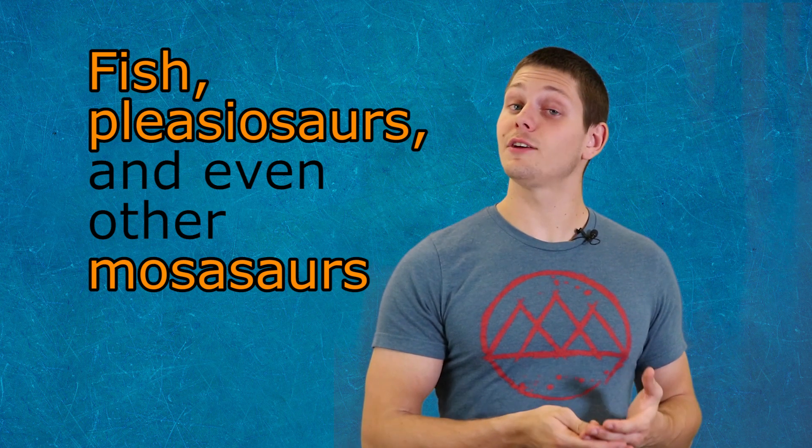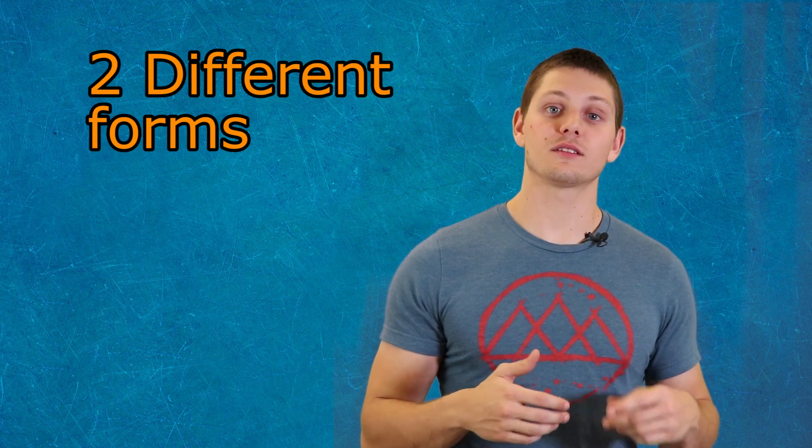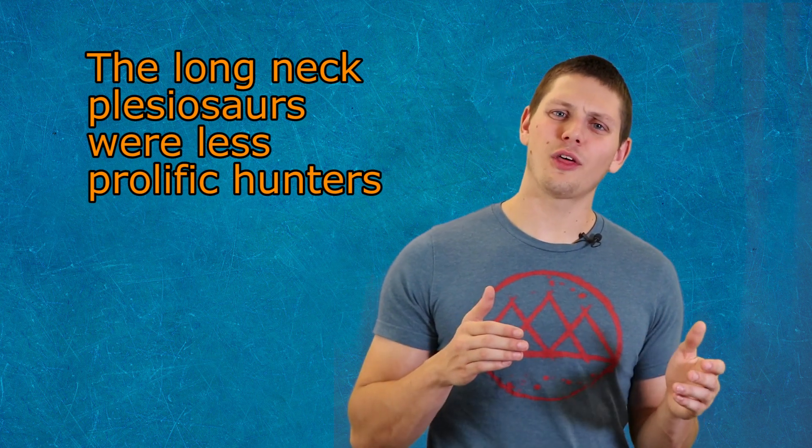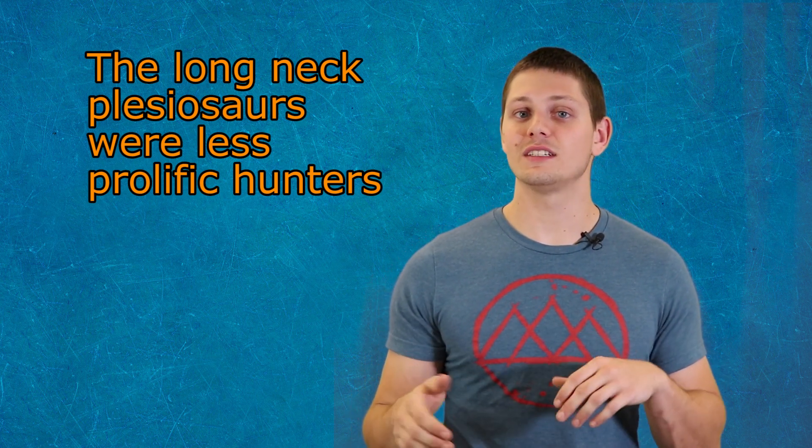They're thought to have preyed on fish, plesiosaurs, and even other mosasaurs. Speaking of plesiosaurs, these guys were also important predators. Well, some of them anyway. Plesiosaurs are split into two morphologies: long neck and short neck. The short neck plesiosaurs were fast swimmers that hunted fish and ammonites based on sight. The long neck plesiosaurs were less prolific hunters and are thought to have swum near the surface, dipping their heads down to hunt for similar prey.